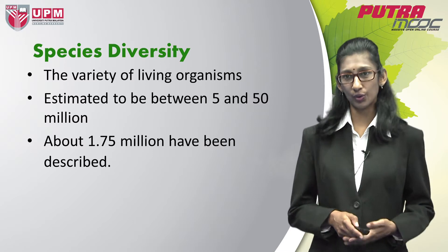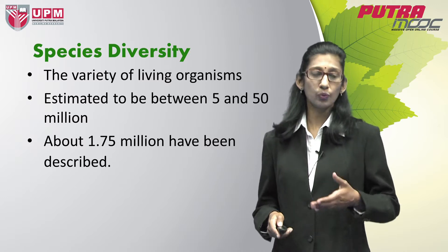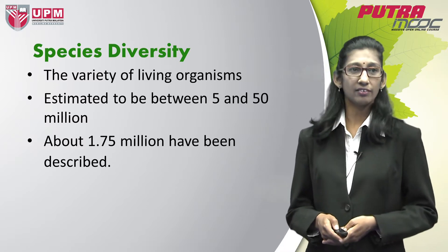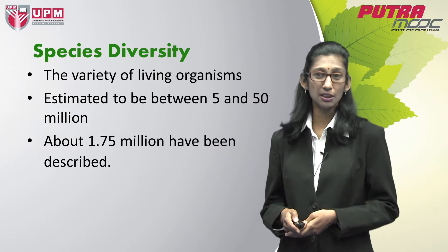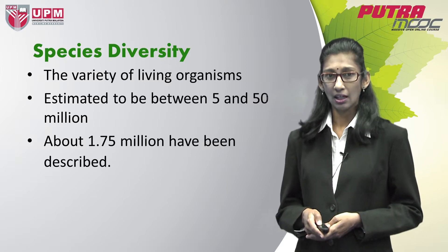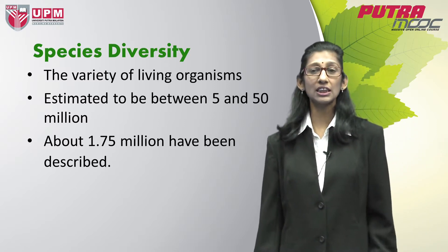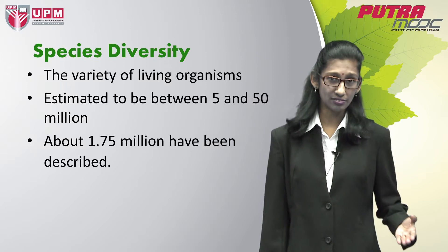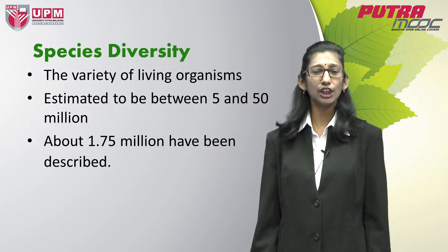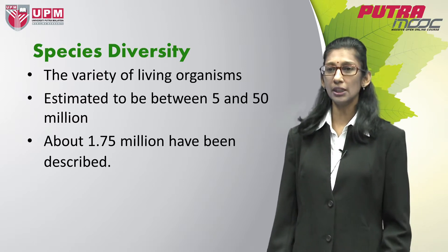The second level is species diversity. This looks at the variety or number of living organisms present within the biosphere. Scientists have estimated that there are about 5 to 50 million or more species present in the biosphere, and out of these, only about 1.7 million — or about 13% — have been identified and described. This means there is a huge potential out there to be discovered and utilized.